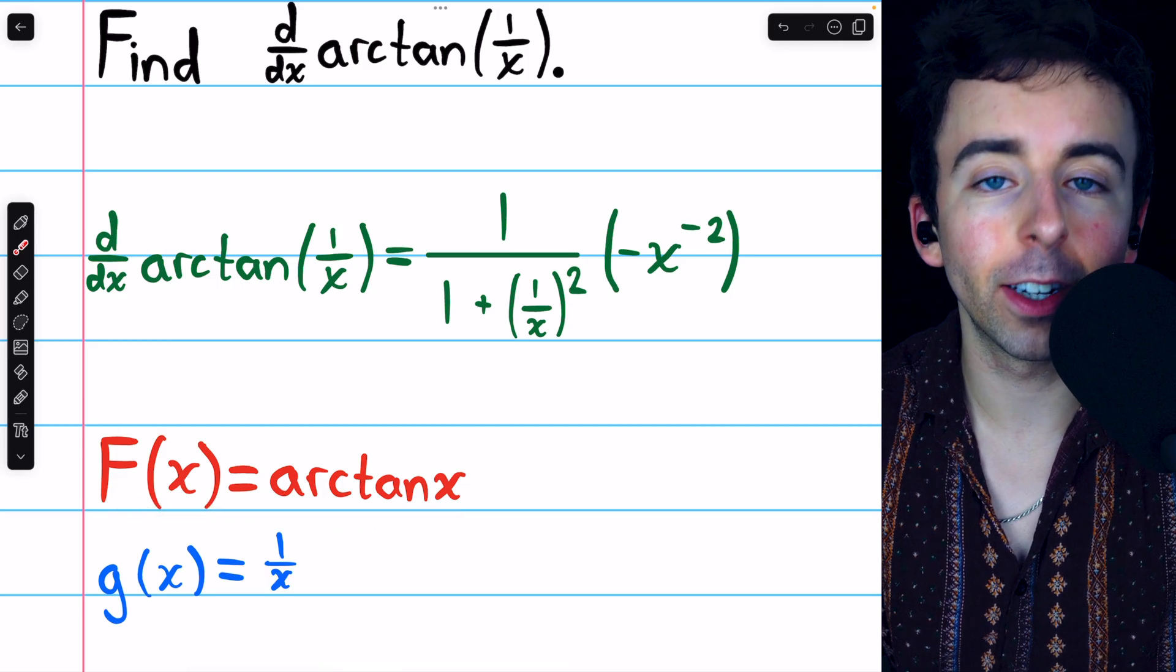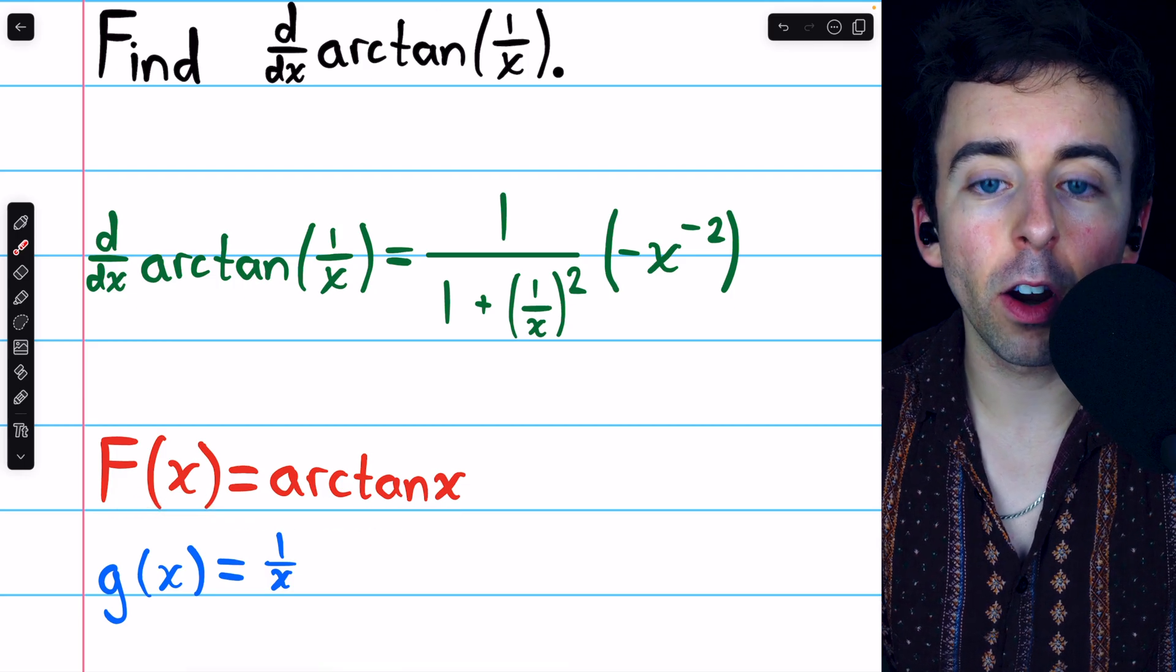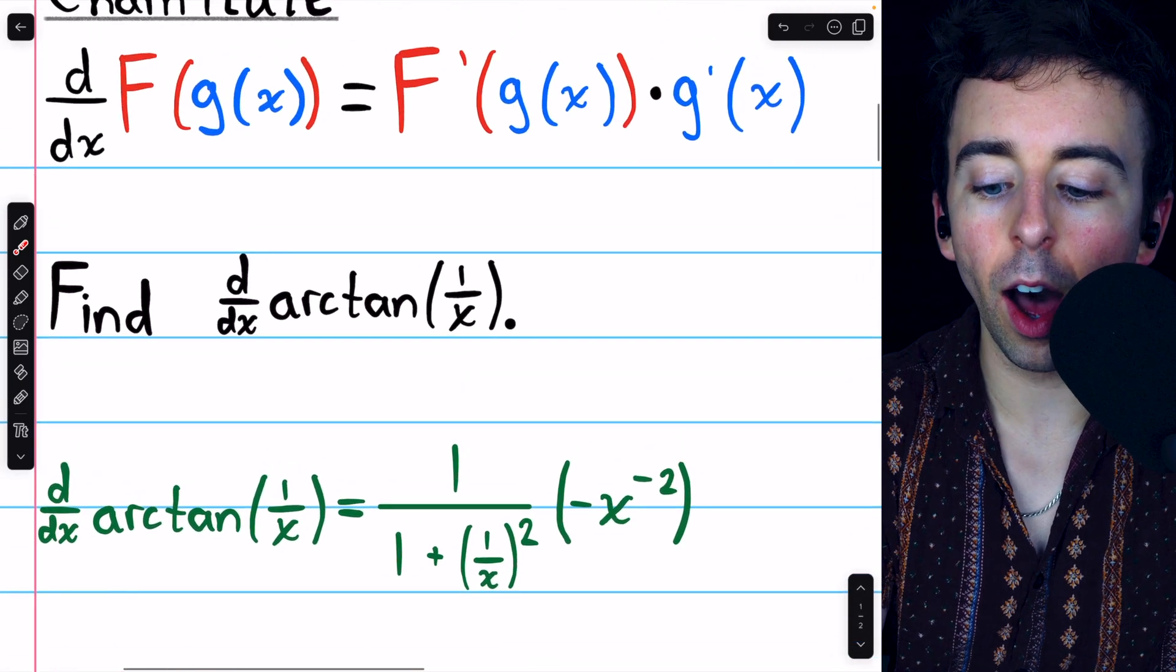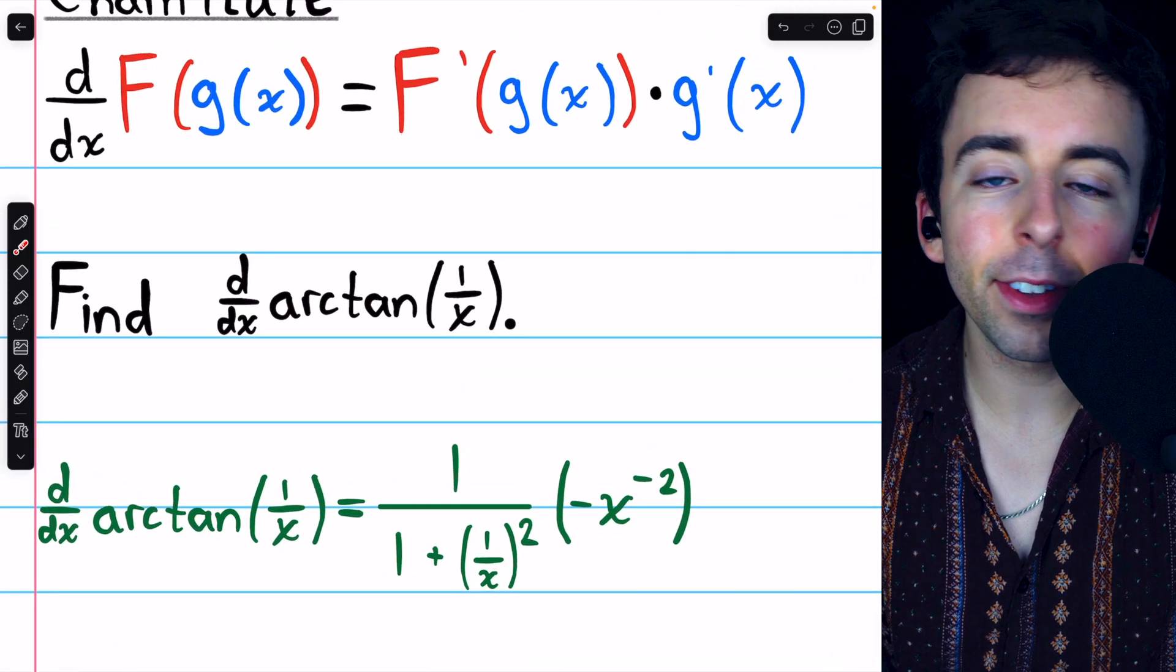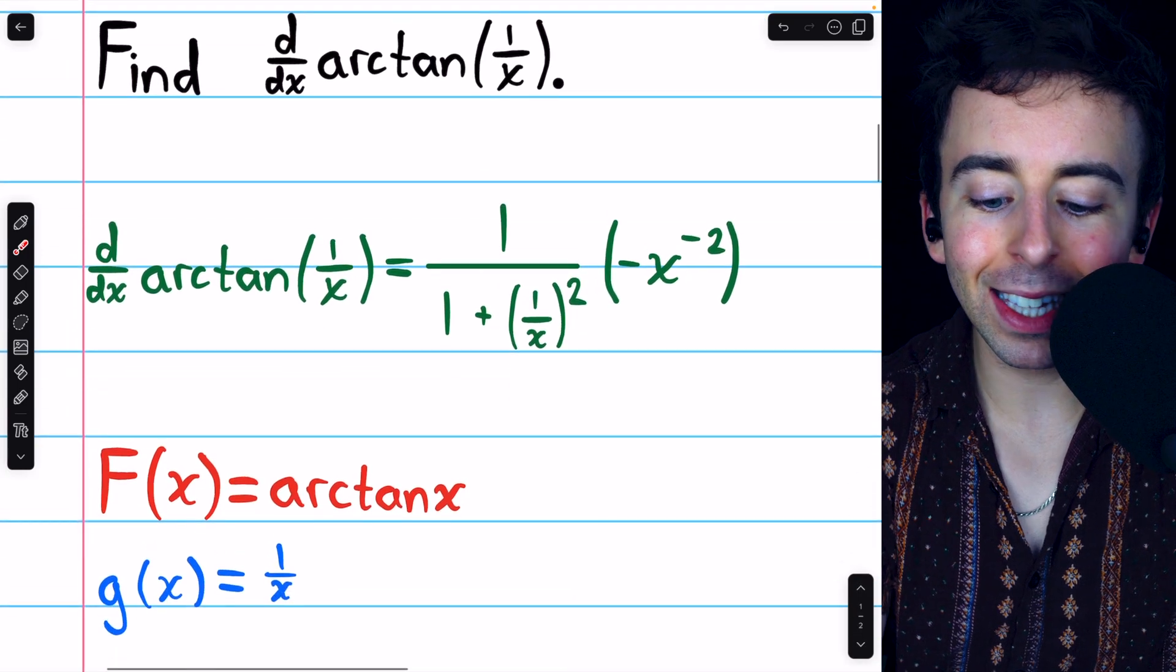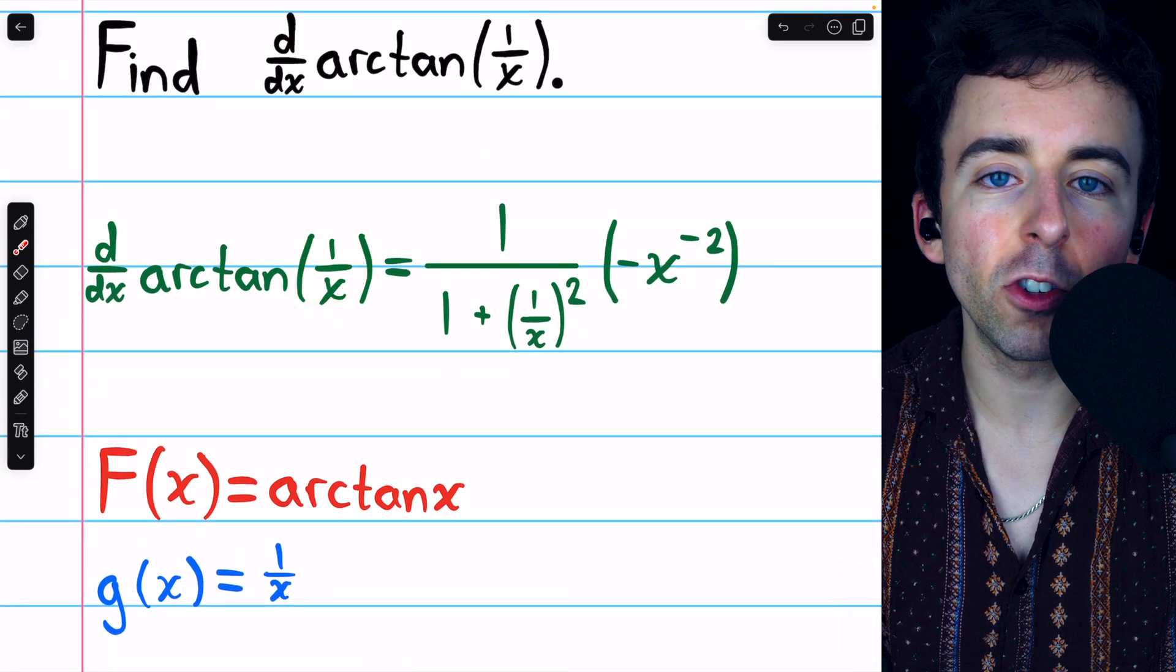The outside function is arctan x, so we have to start with f prime of g of x. That means we need to take the derivative of arctan, but leave that inside function unchanged.